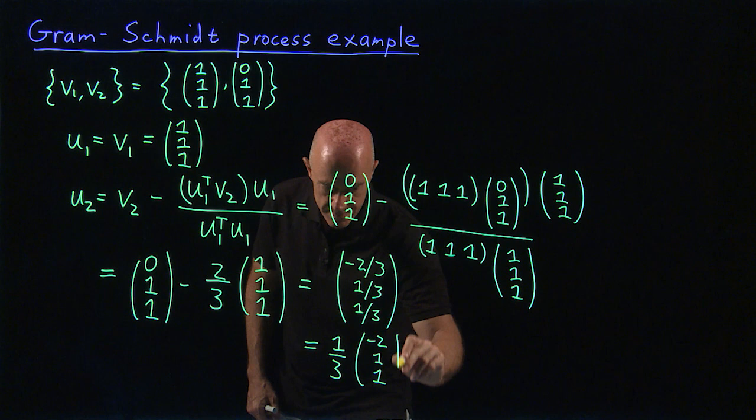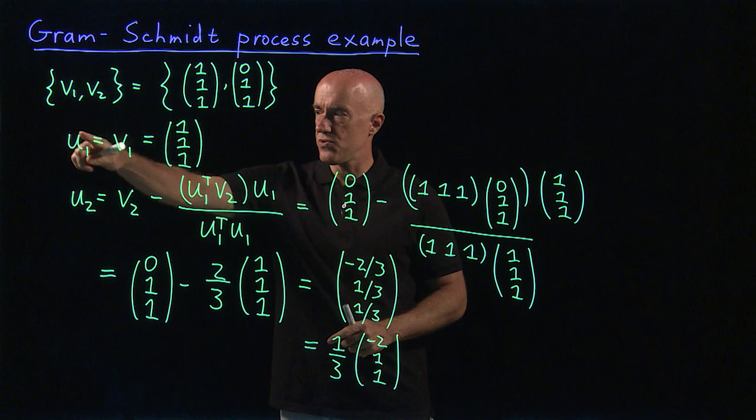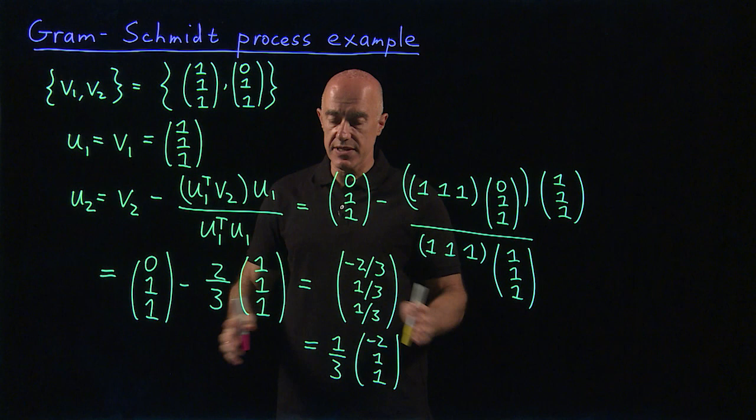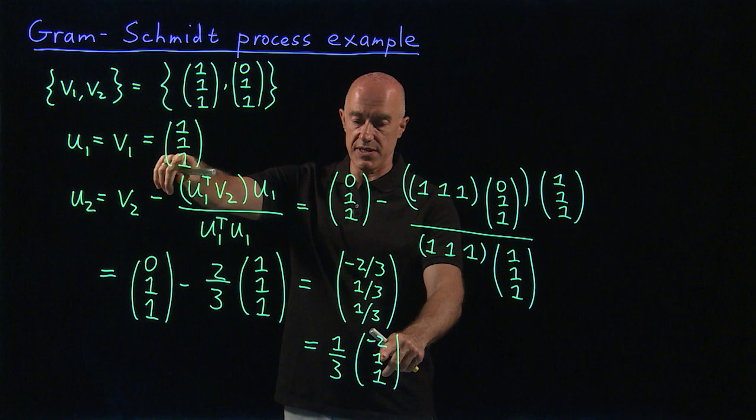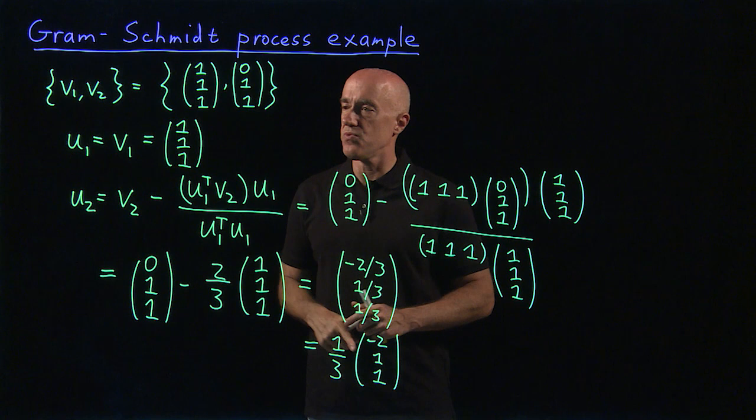U1 and U2 are orthogonal, right? This 1/3 is a constant, doesn't really matter. So U1 transpose times U2, if we forget about the 1/3, is minus 2 plus 1 plus 1 is 0. So now U2 is orthogonal to U1.